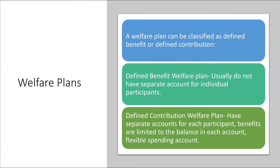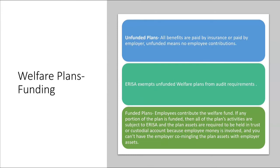There are two types of employee benefit plans: welfare plans and pension plans. A welfare plan can be classified as defined benefit or defined contribution — and so can a pension plan. A defined benefit welfare plan usually does not have separate accounts for individual participants, whereas a defined contribution plan has separate accounts for each participant, with benefits limited to the balance in each account, like a flexible spending account.